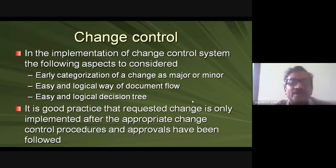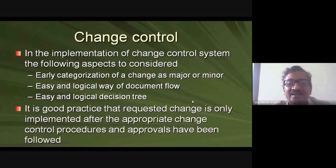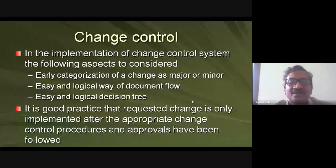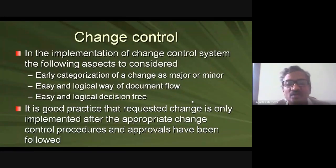The change control process involves: getting approval first, sending to the budget department for money sanction, ordering the part, installing it, and performing any required revalidation to maintain validation status. If you throw out a qualified piece of equipment, replace it with a new one, and claim prior qualification applies, that is incorrect — the new equipment must be requalified. Operating without a valid qualification status means you are not manufacturing per GMP.